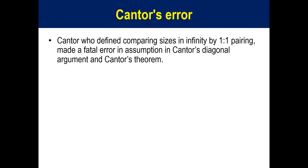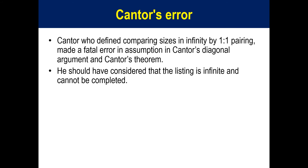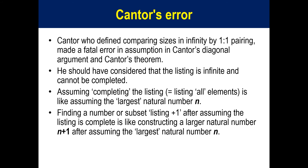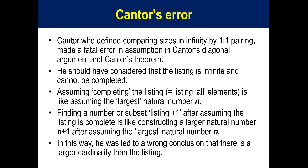Cantor, who defined comparing sizes in infinity by 1-to-1 pairing, made a fatal error in assumption in Cantor's Diagonal Argument and Cantor's Theorem. He should have considered that the listing is infinite and cannot be completed. Assuming completing the listing — that is, listing all elements — is like assuming the largest natural number n. Finding a number or subset beyond the listing after assuming it is complete is like constructing a larger natural number n+1 after assuming the largest natural number n. In this way, he was led to a wrong conclusion that there is a larger cardinality than the listing.